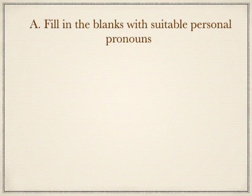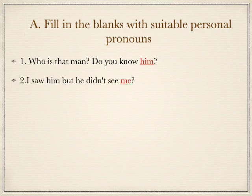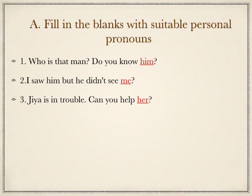Let us understand personal pronouns with Exercise A on page number 22. Fill in the blanks with suitable personal pronouns. Question 1: Who is that man? Do you know dash? — For man, we use the object pronoun him. So the answer is him. Question 2: I saw him, but he didn't see dash — the answer is me, which is an object pronoun. Question 3: Jia is in trouble. Can you help dash? — For Jia, we use her. So her is the object pronoun.